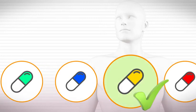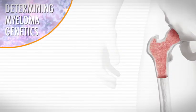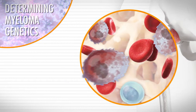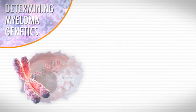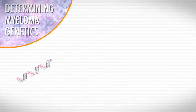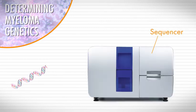To put together a patient's genomic profile, the doctor takes myeloma cells from the patient's bone marrow, removes the DNA from these cells, and then runs it through a machine called a sequencer.